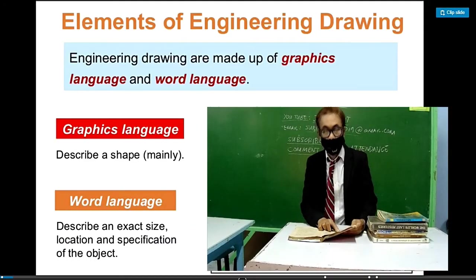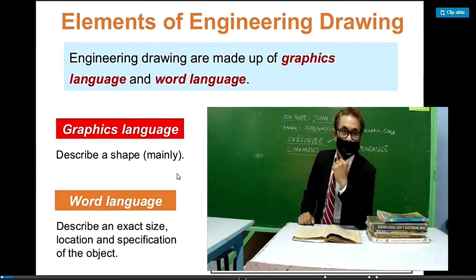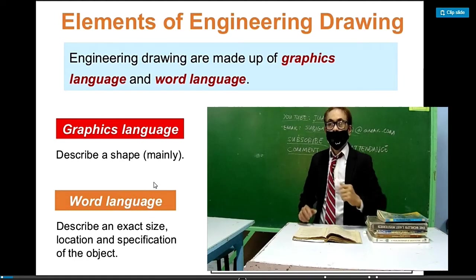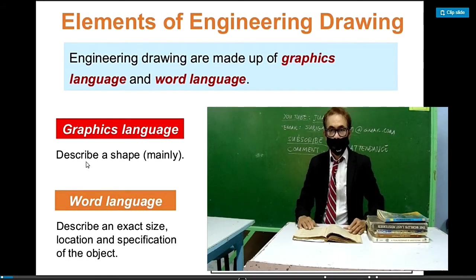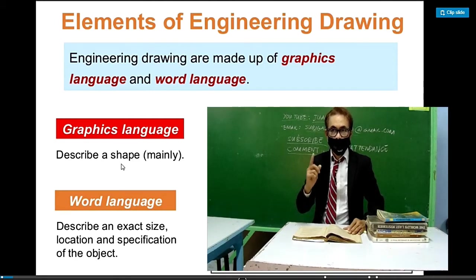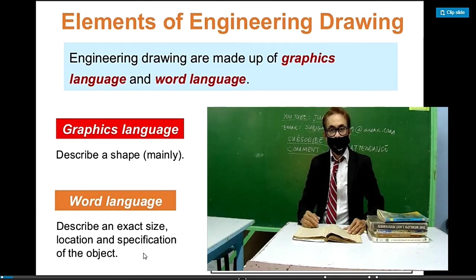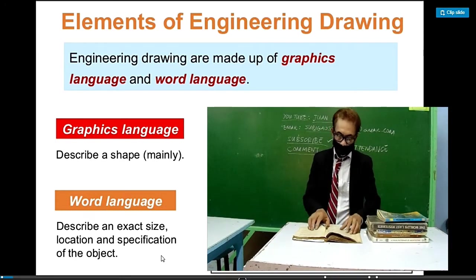There are elements of engineering drawings: the graphic language and the word language. Ano bang ibig sabihin ng graphic language? This describes the shape and appearance, while the word language describes the exact size and specification of the object.